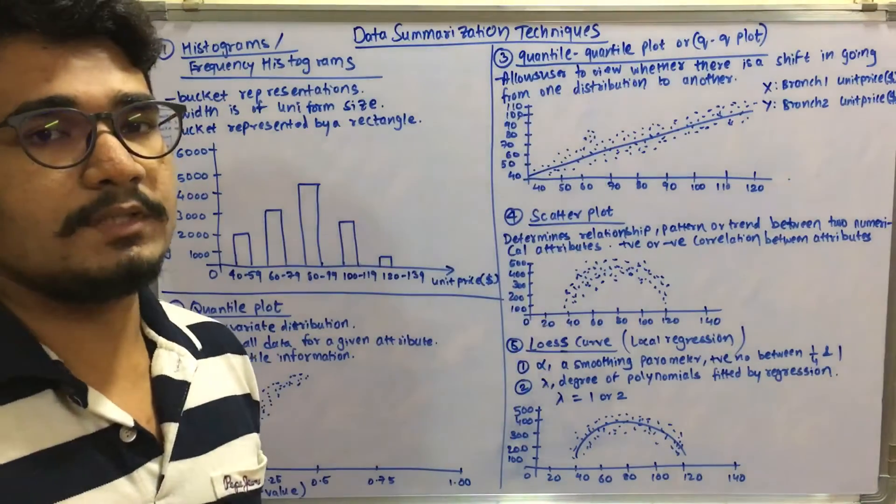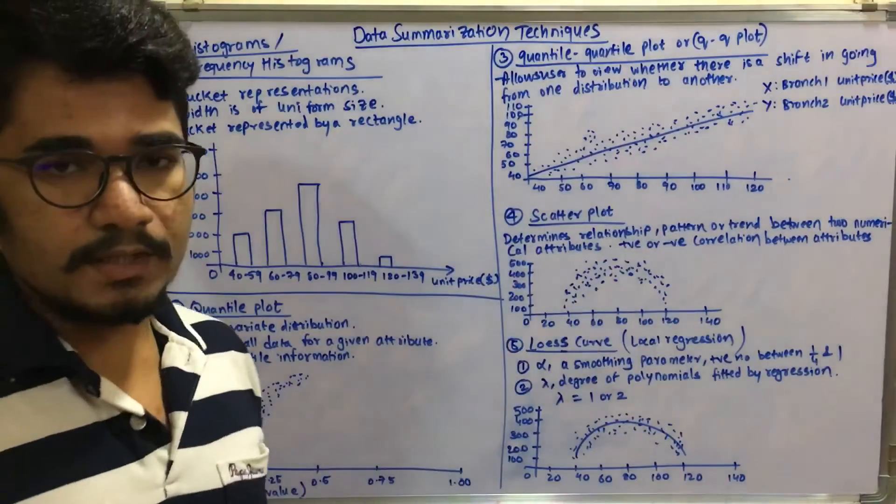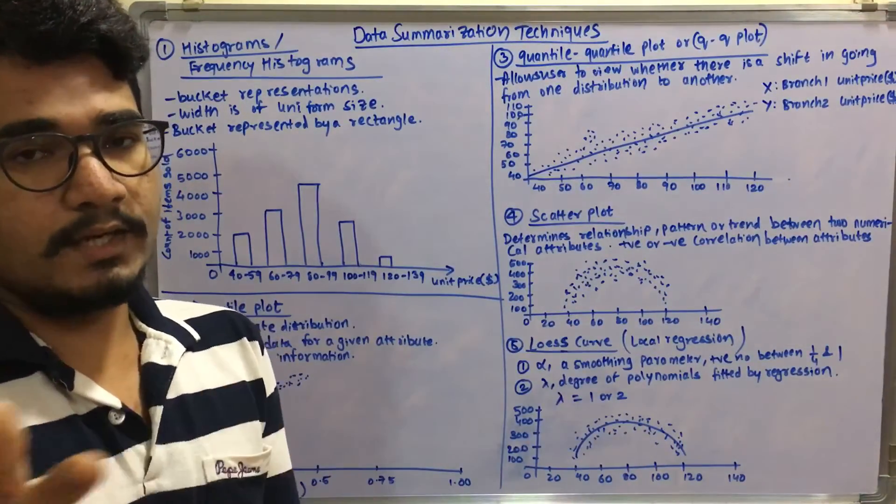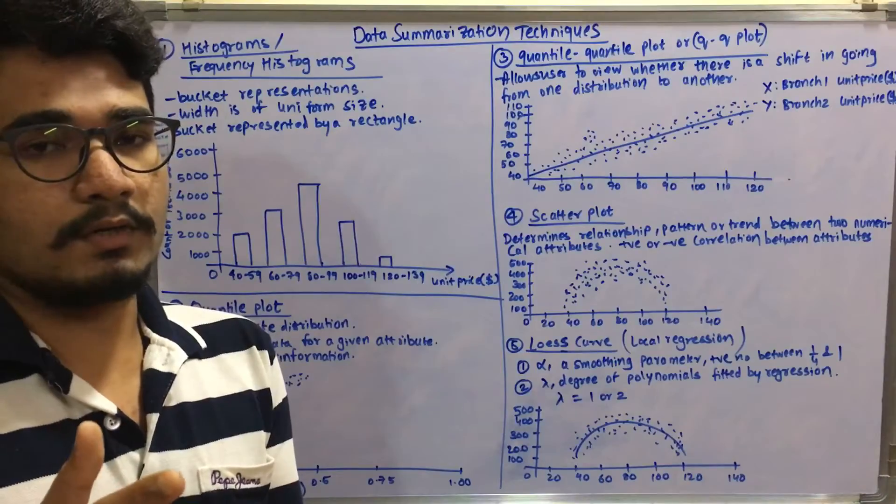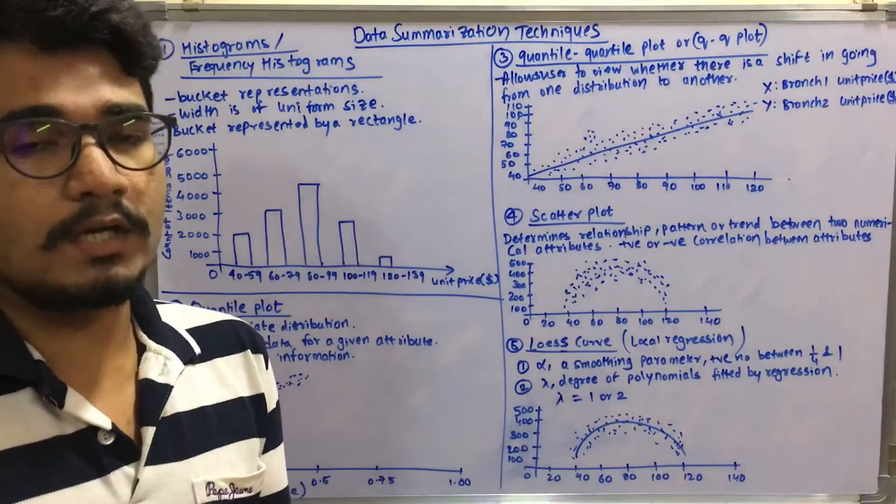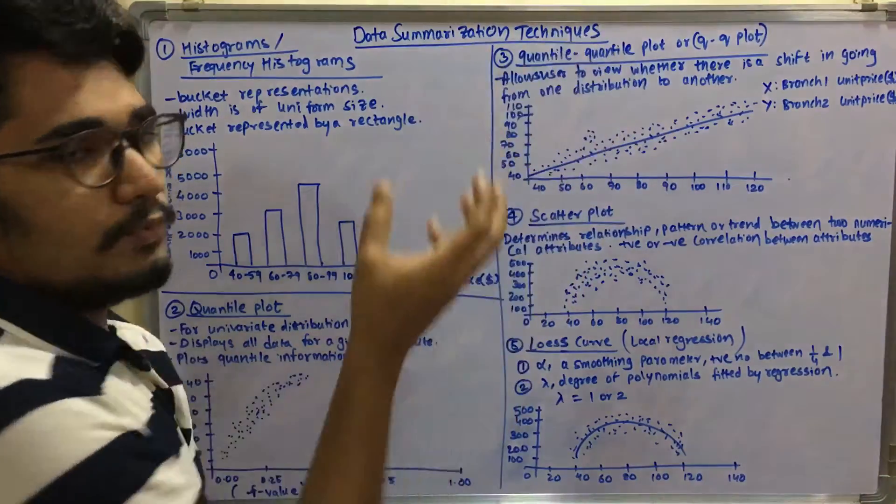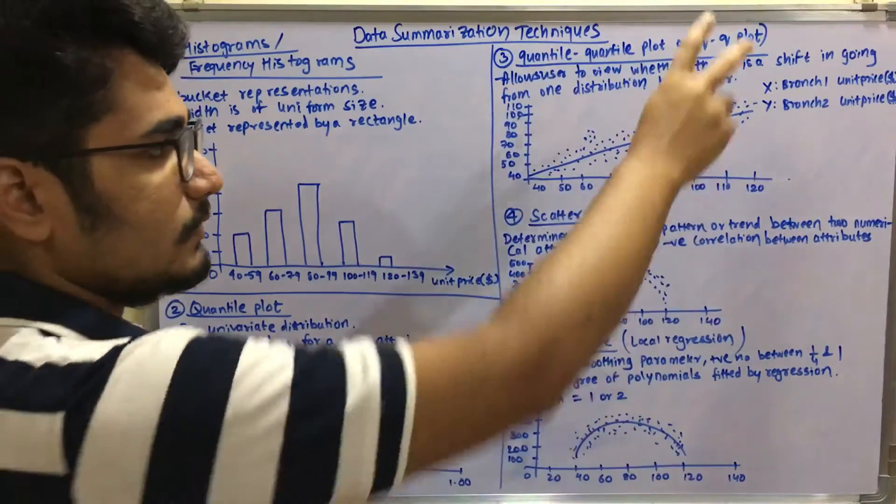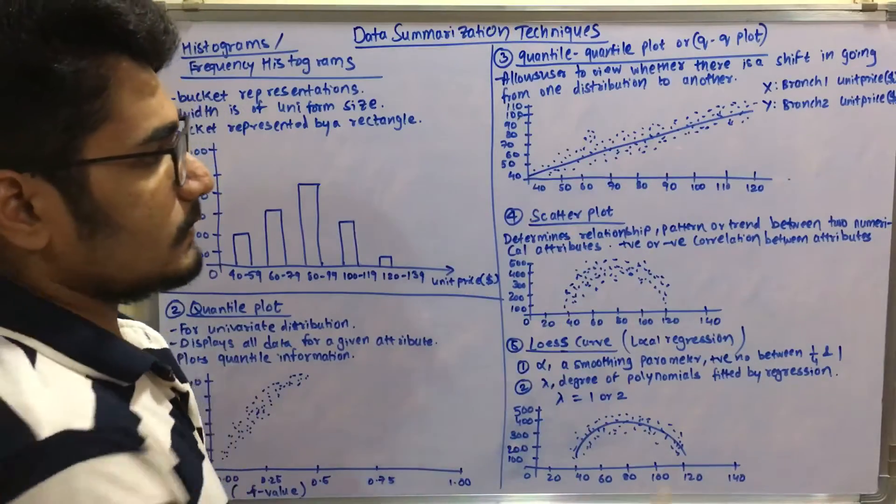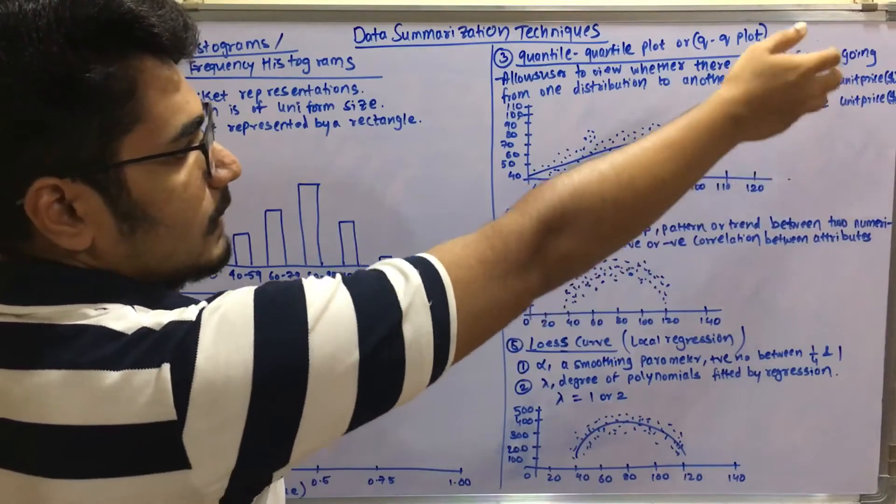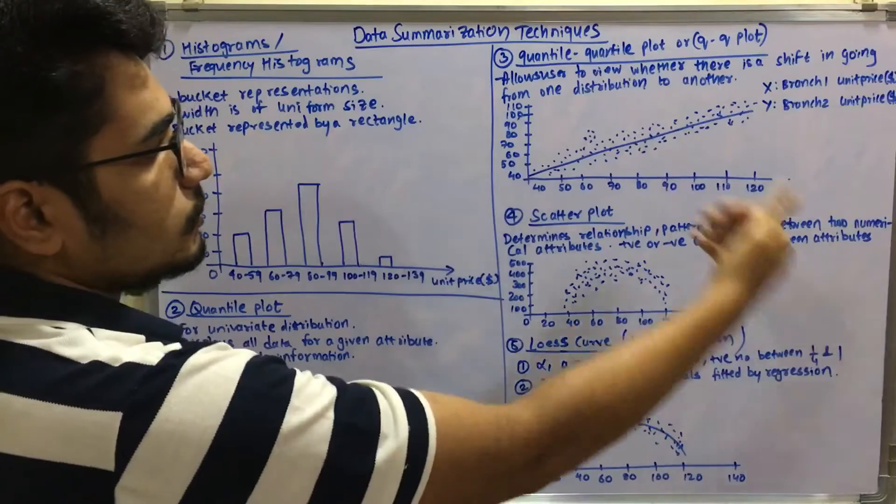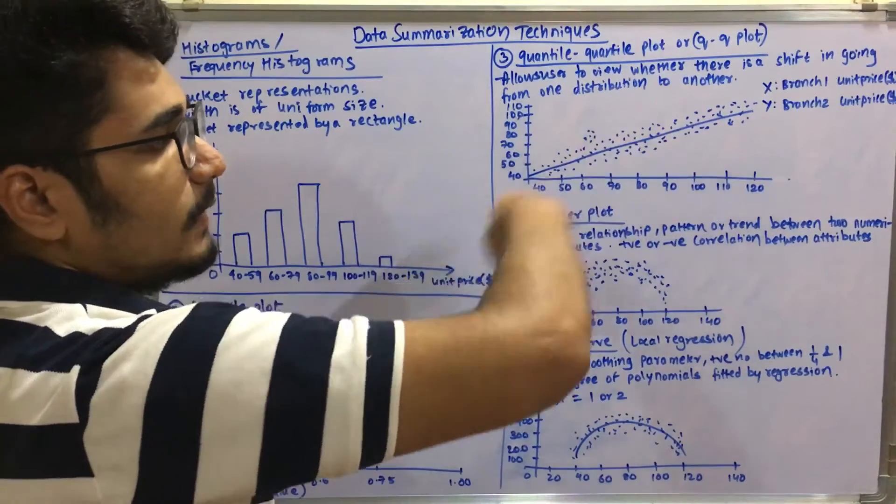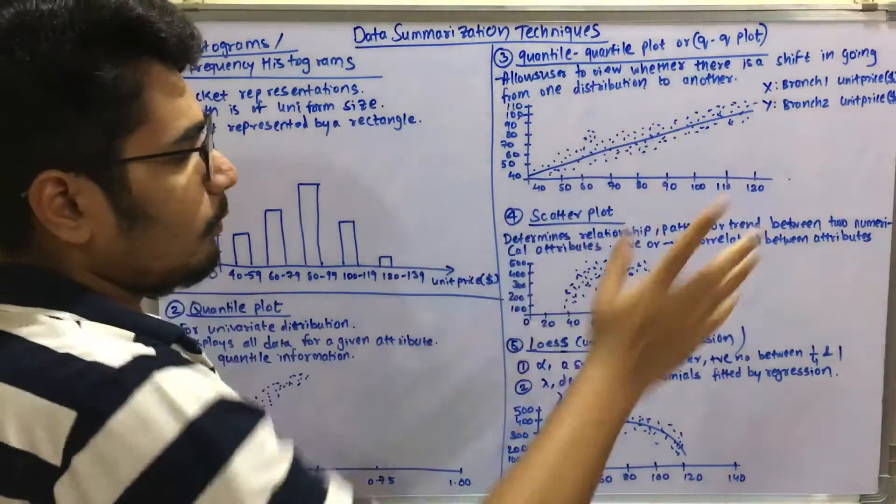Whereas this is used for allowing user to view whether there is a shift in particular dataset, whether it's going from one distribution to another. Like if you have agglomerative distribution and then if you're going for some other kind of distribution, then is there any deviation or any kind of shift in particular or goodness of fit in that particular curve. Then for that you use a QQ plot, quantile-quantile plot. As you can see from the X and Y axis, you take two different branches of two different unit prices, like you have branch one and branch two at X and Y axis, and then you have this curve represented with the help of the data points in this manner.